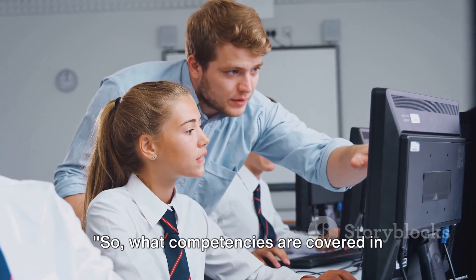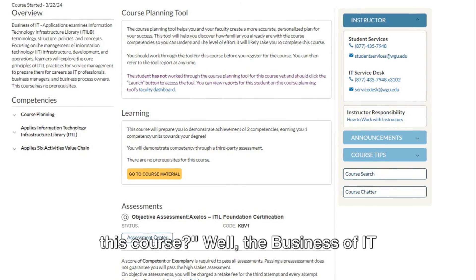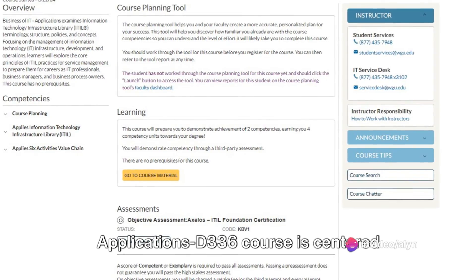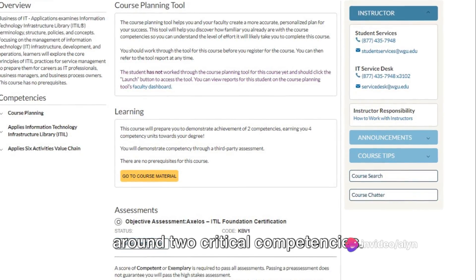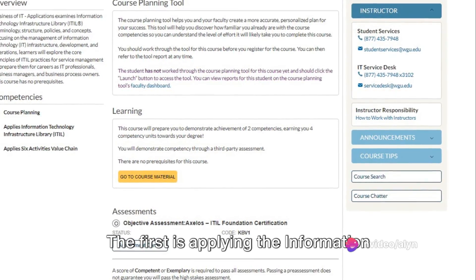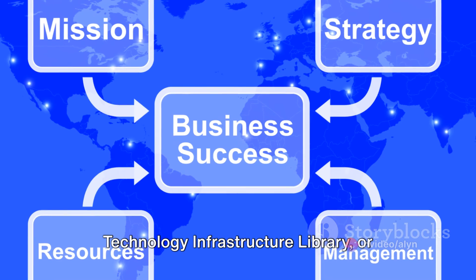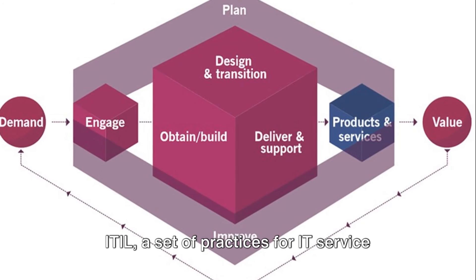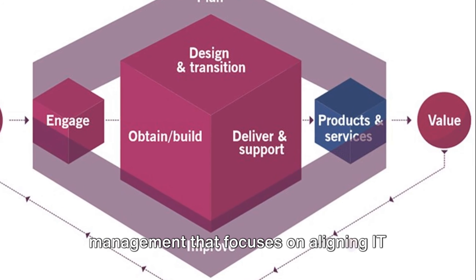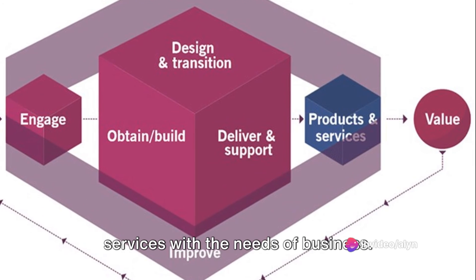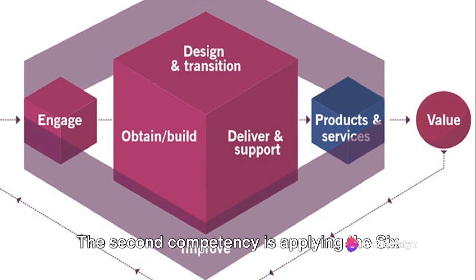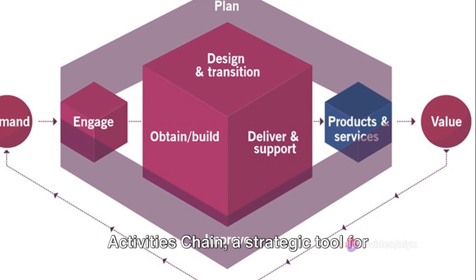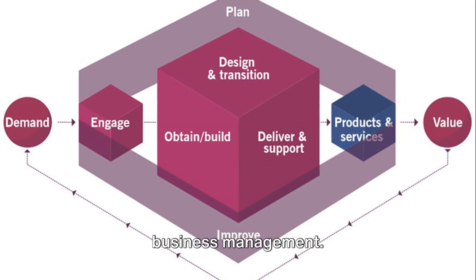What competencies are covered in this course? The Business of IT Applications D336 course is centered around two critical competencies. The first is applying the Information Technology Infrastructure Library, or ITIL, a set of practices for IT service management that focuses on aligning IT services with the needs of business. The second competency is applying the six activities chain, a strategic tool for business management.